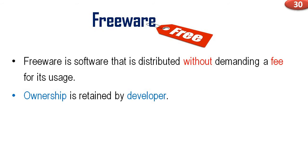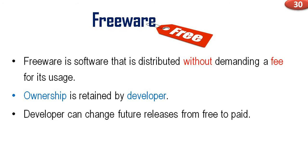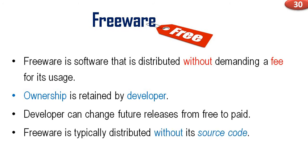The developer distributes freeware but still retains ownership. The developer can change future releases from free to paid — version 1 is freeware and version 2 can be made paid. Freeware is typically distributed without its source code; it is not open source software. They give it to you without any fee, but they won't give you the source code. You can use it, that's all. That's freeware.